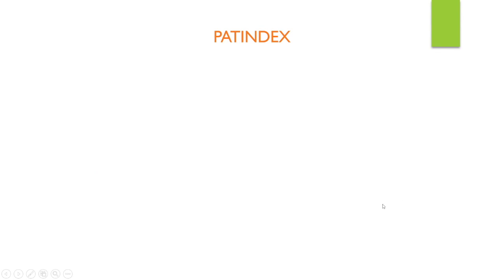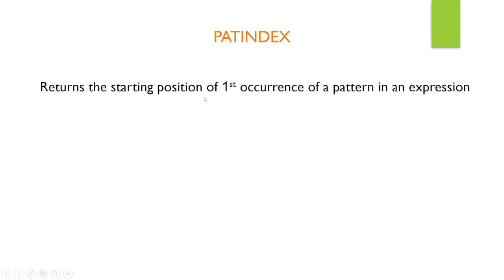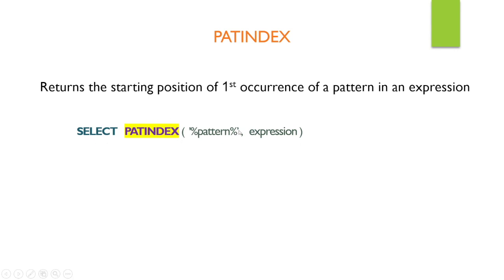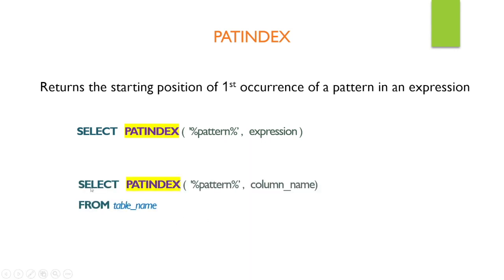The next is PATINDEX, which returns the starting position of the first occurrence of a pattern in an expression. The syntax is SELECT PATINDEX, with percent signs around the string you want to search for — the first occurrence is what it returns. You provide the string expression and the column name from whichever table you want to select. All other WHERE conditions are optional.